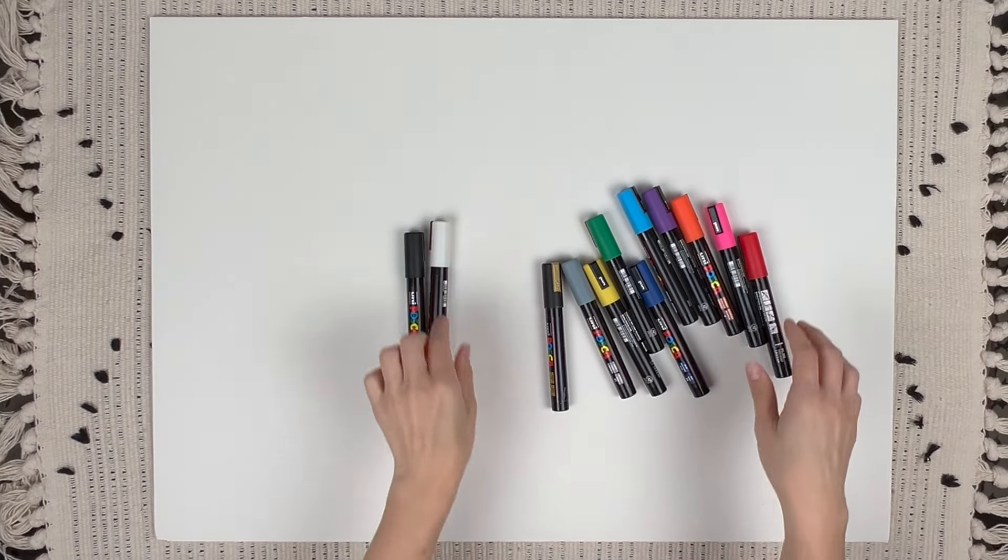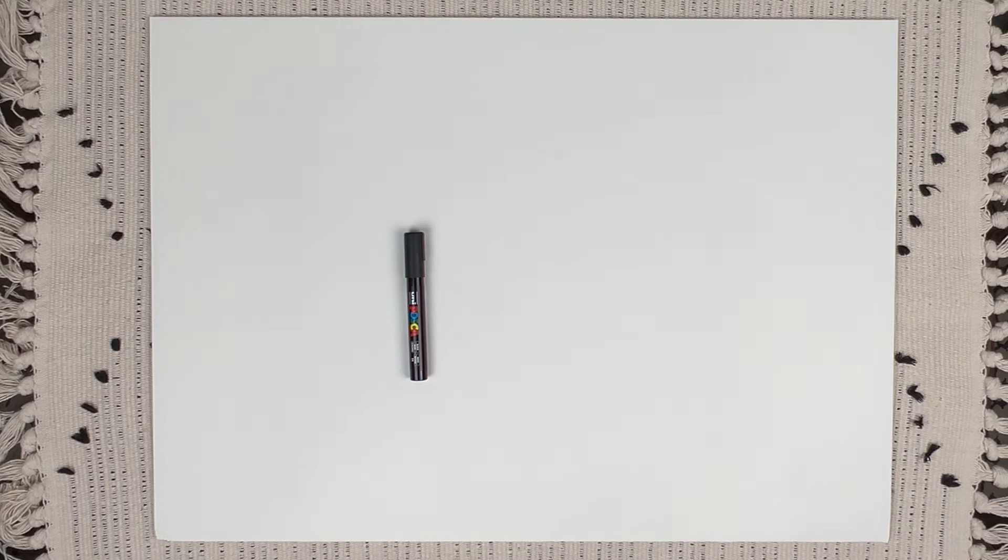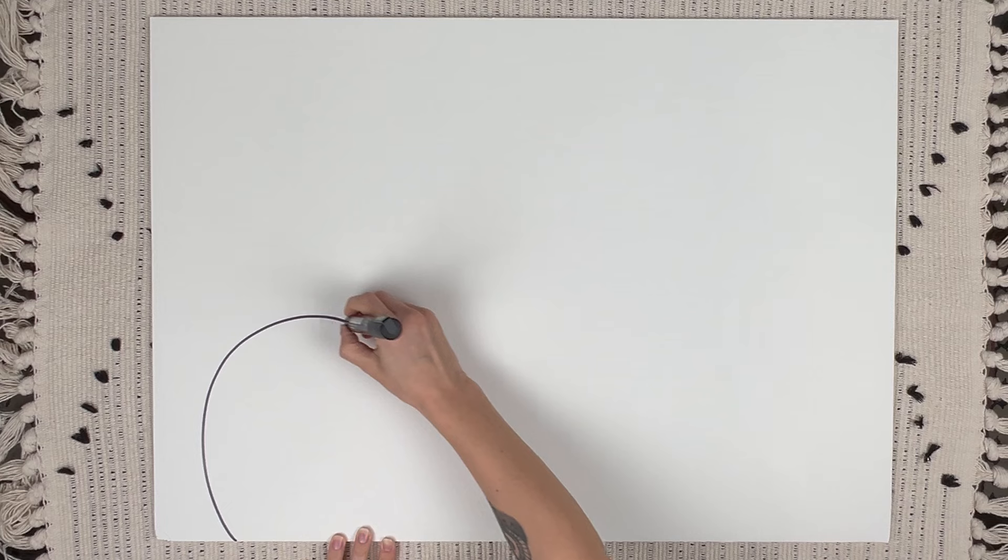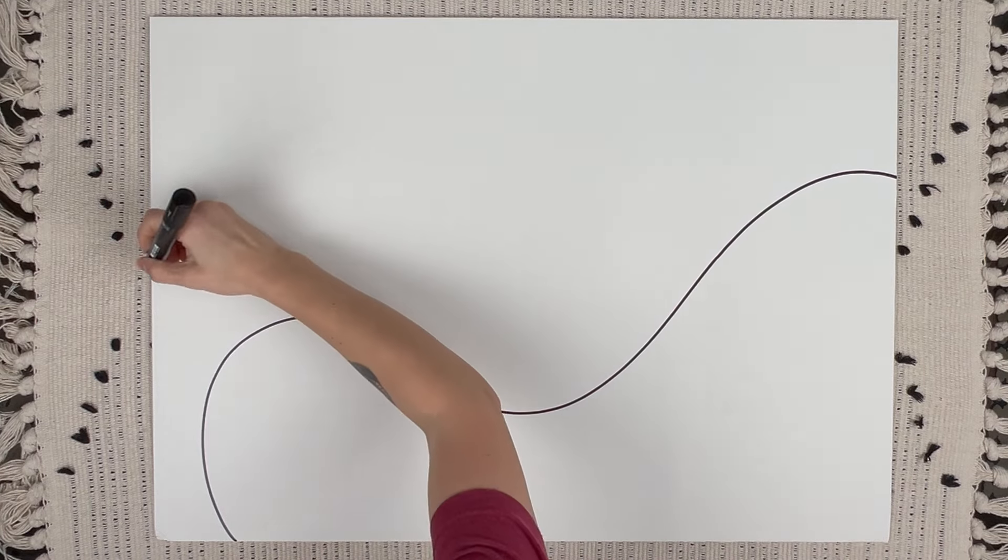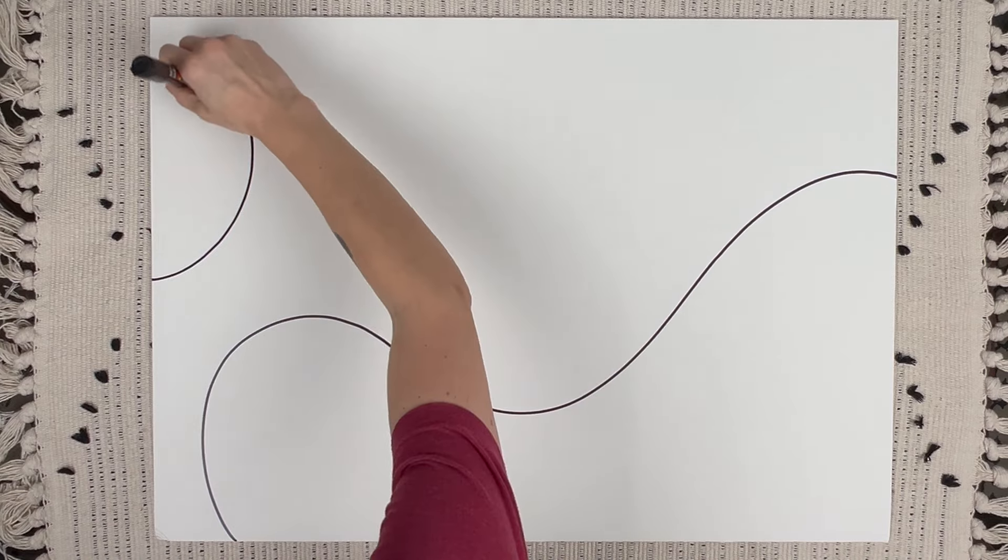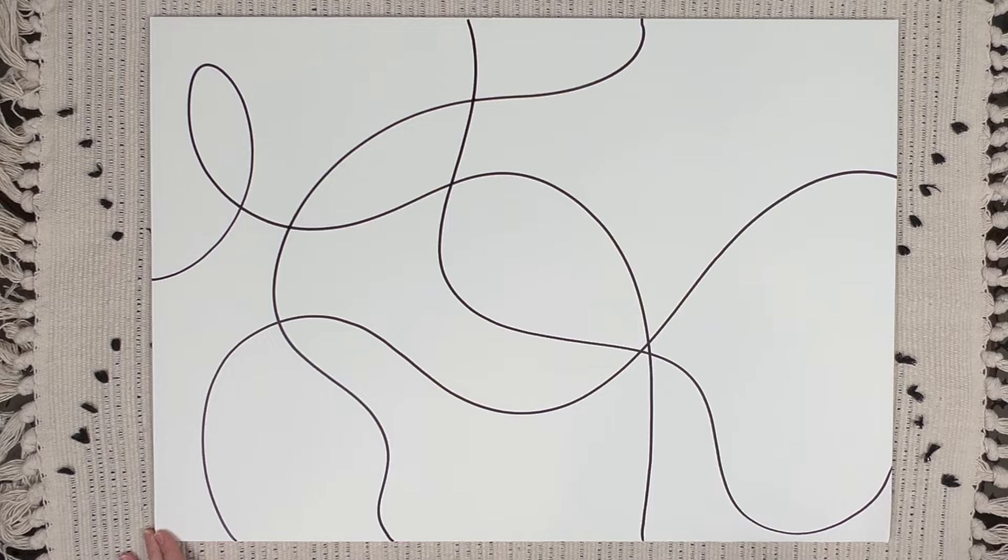This is going to be my largest doodle yet. I've got my Posca paint pens, pretty much all the colors, and I'm going to start with the black paint pen and draw flowy lines across the paper. This will create shapes and different sections for me to go back and color and doodle in later.